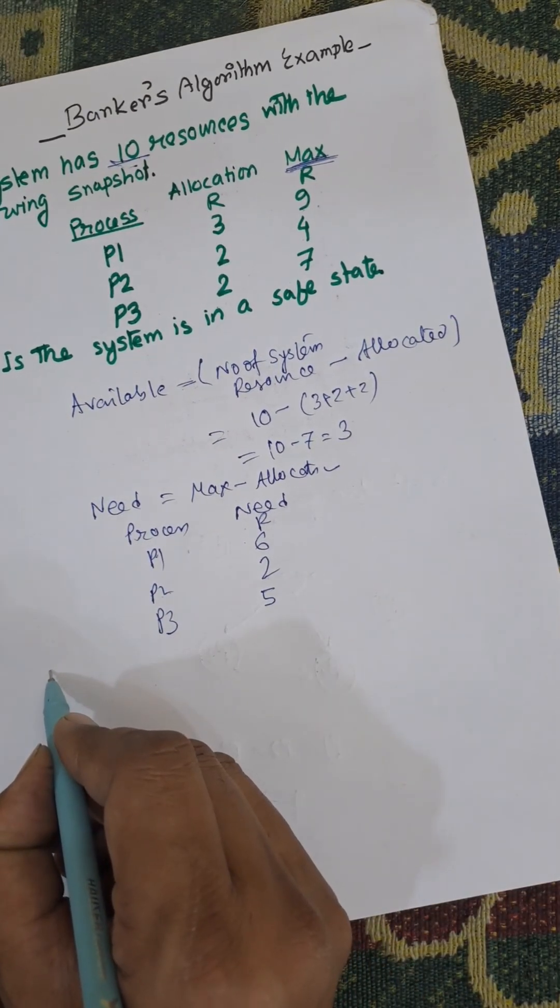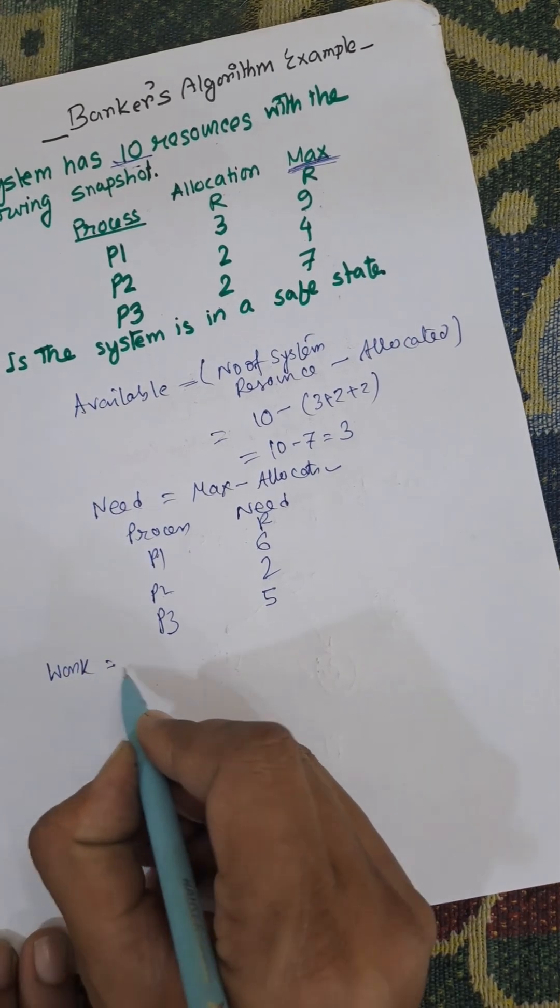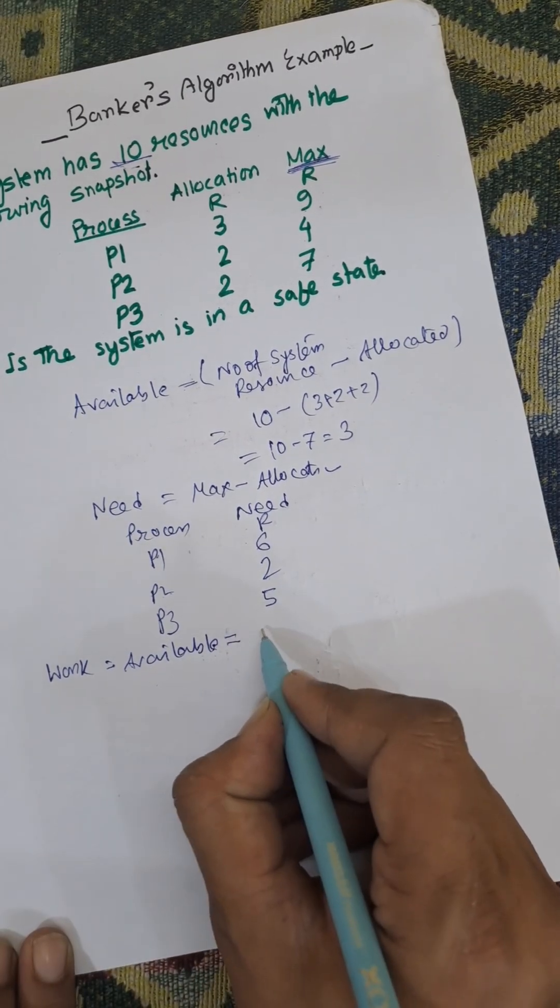Now initially, we need a work variable, that is work equals available. Work is initially stored, available, available equals 3.